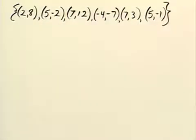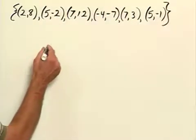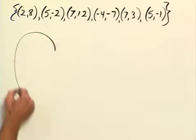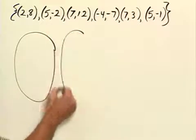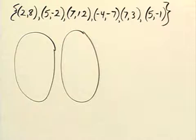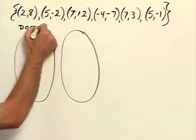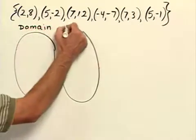To write this relation as a map, we begin by writing two circles like this. We label one of them to be the domain and the other one to be the range.